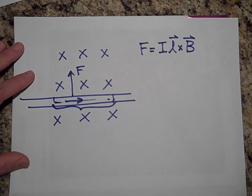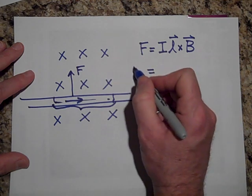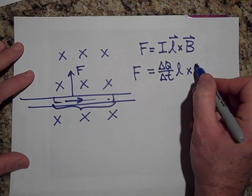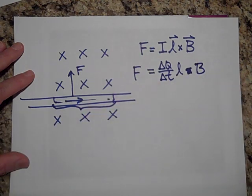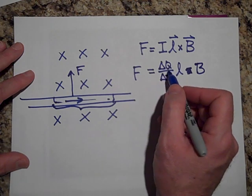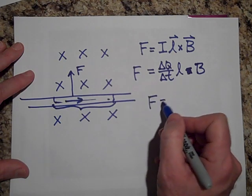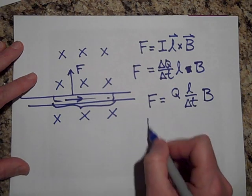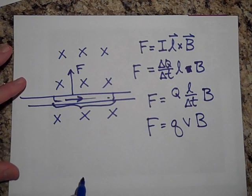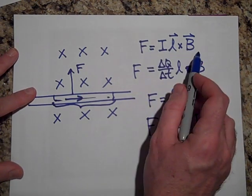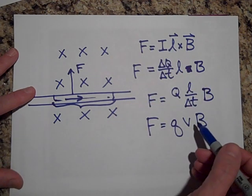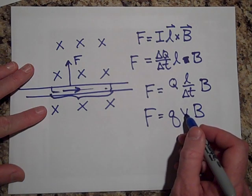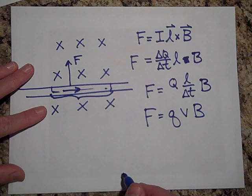Where does this come from? F = I·L cross B starts from F = ΔQ/ΔT times L cross B. Bring Q outside: that gives Q times (L/ΔT) times B. You see how L/ΔT is velocity, so this is like Q·v·B — but for a wire it becomes I·L·B. So F = ILB is really derived from F = Q·v cross B, and L/ΔT is dx/dt.